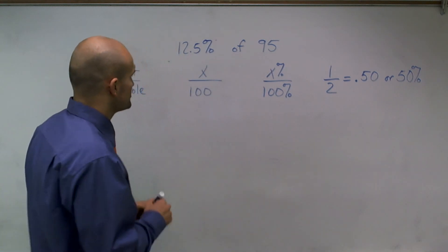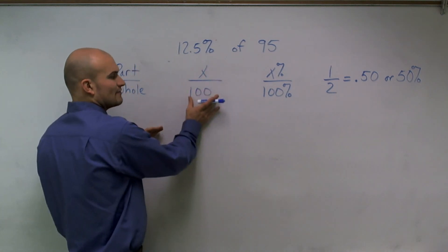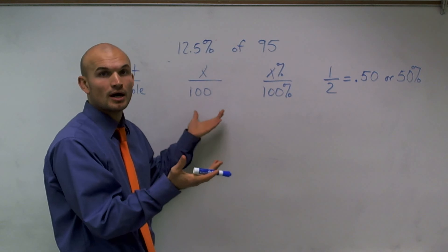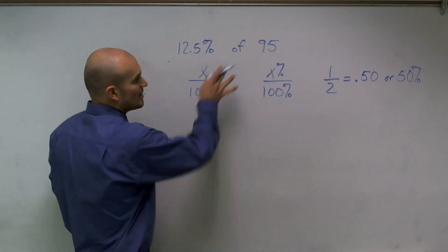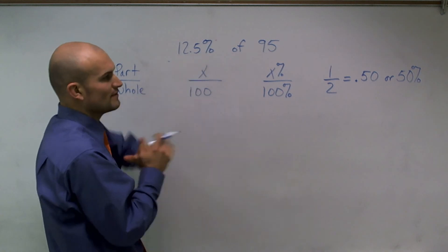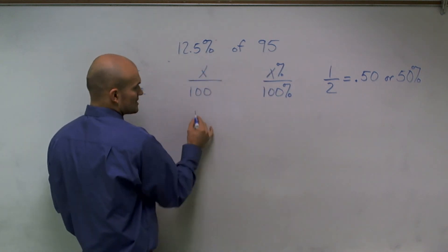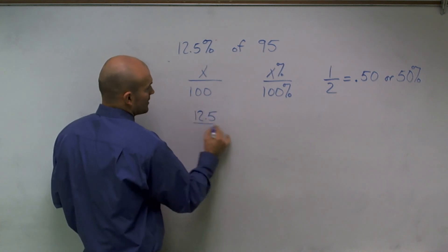So what we need to do is when we're dealing with fractions and percentages, we always like to deal with it out of 100, because we're dealing with 100 as your whole. However, in this equation or in this problem, they're asking us to define 12.5%. Now, remember, I told you 12.5 is your percentage. So what I'm going to do is I'm going to write 12.5 out of 100.